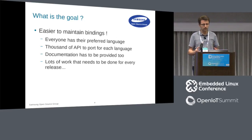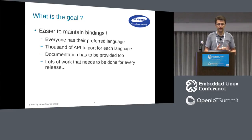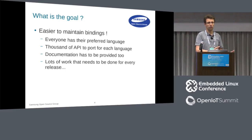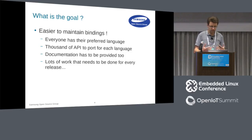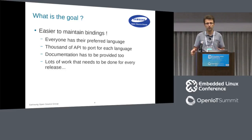We need a way to generate bindings efficiently for every language in a maintainable way. We also want documentation that matches each language, so you don't rely on the C documentation to use the toolkit in Python. That is really the core of the work. We also want to ensure that on the day of a release, every binding has full support for all the new APIs being pushed.